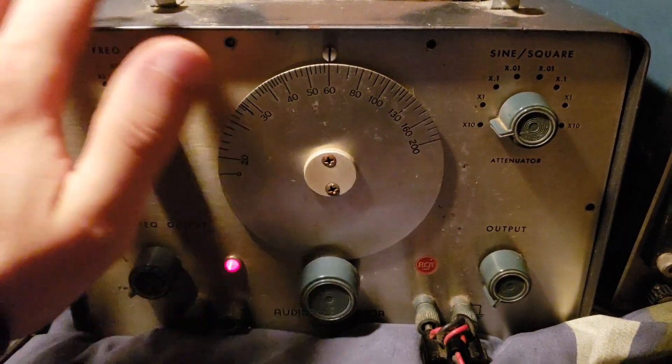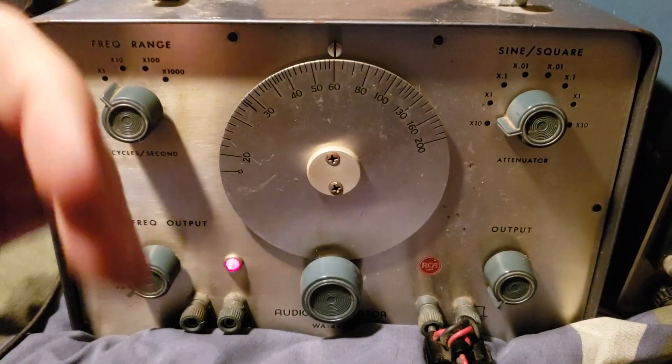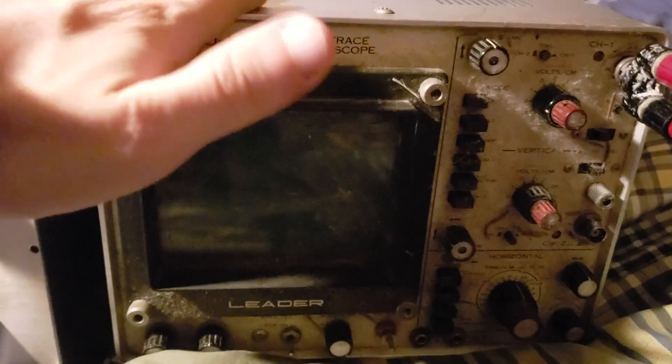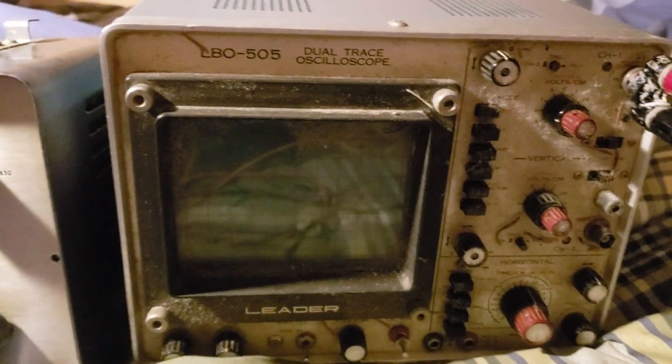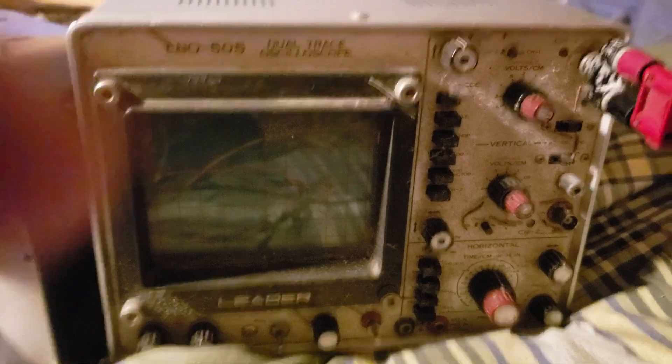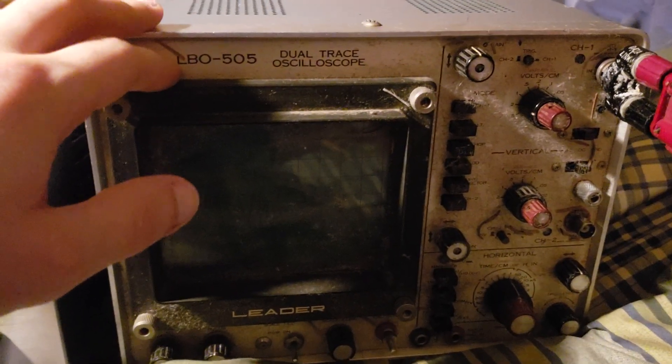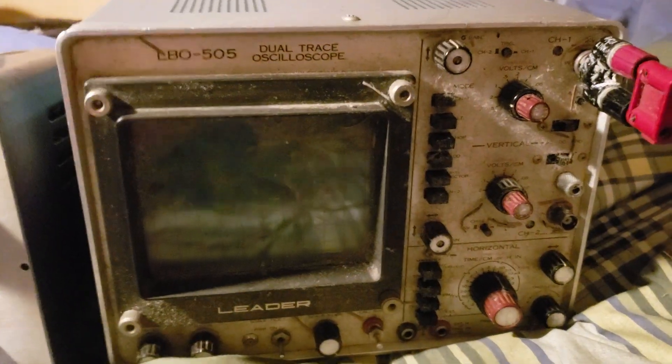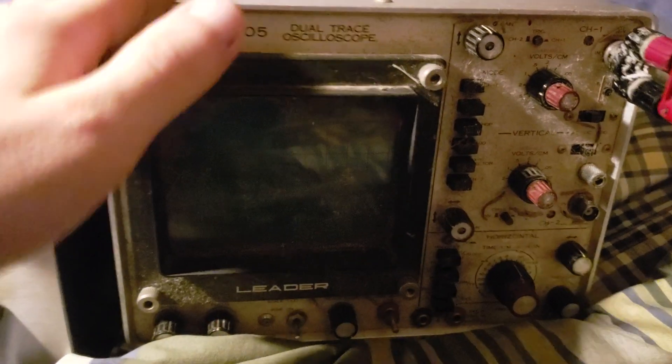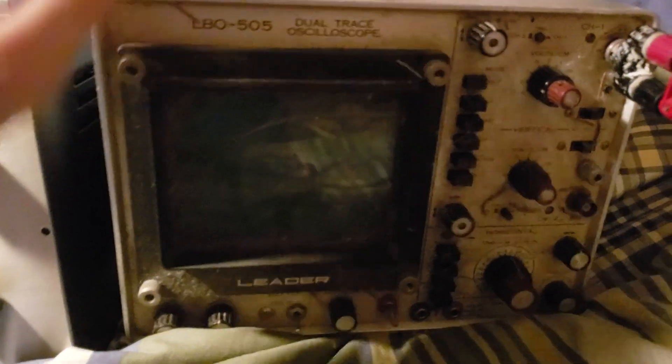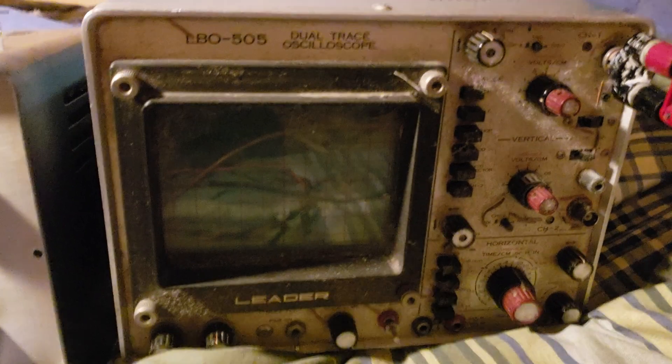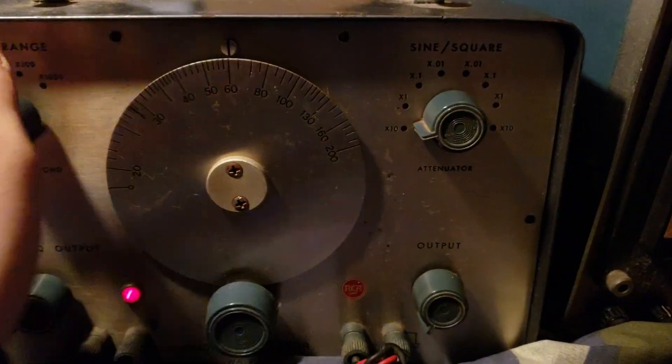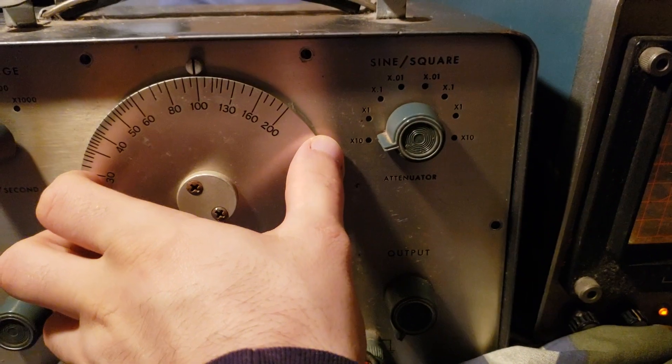What you would do is take this signal and hook it up to the input of something. Then you can take an oscilloscope here and hook it up to the output. If you don't know what an oscilloscope is, I would definitely recommend checking out the video. I'll put a link down in the description all about oscilloscopes. Let's turn this on.